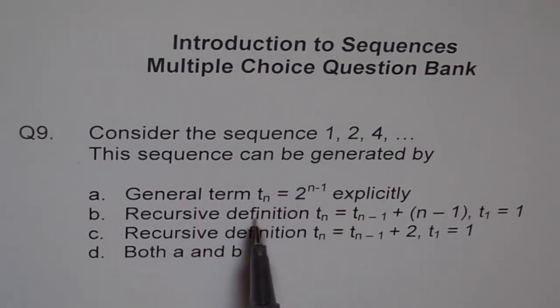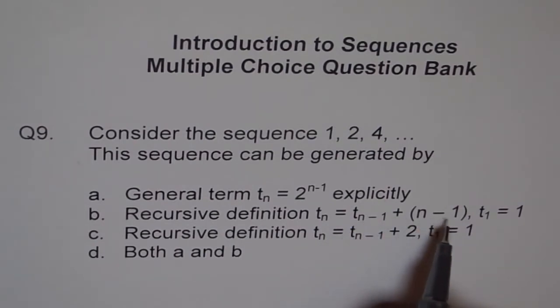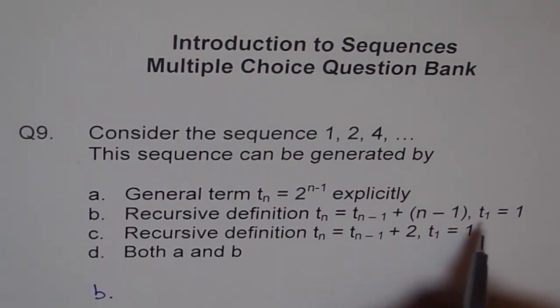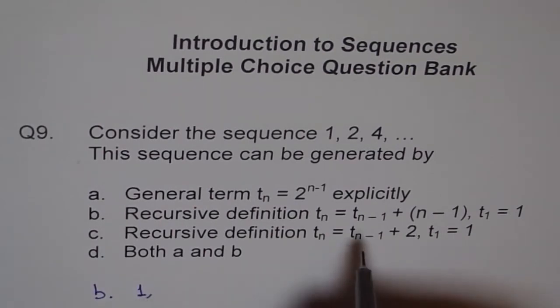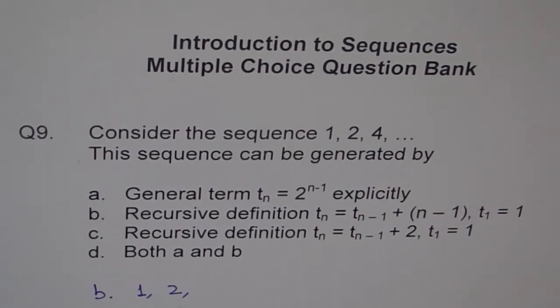So this sequence can be generated by T_n equals 2 to the power of n minus 1. Let's check B also. B says T_n equals T_(n-1) plus n minus 1 where T_1 is 1. So option B, let's work it out. First term is 1. Now second term gives 2. T_2 is T_1 plus n minus 1, so 2 minus 1 is 1, so 1 plus 1 is 2. So we get the second term as 2.